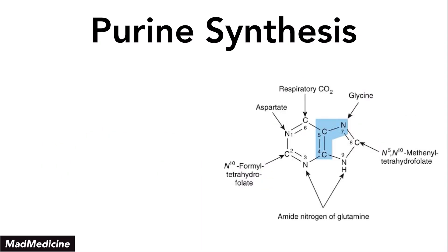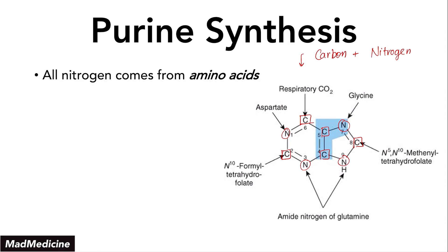Let's talk about this synthesis process. This image is very high yield and important. There are two essential components of any nucleotide you need to know. Number one is carbon — from several molecules shown here. Number two is nitrogen — from several positions shown here. You need to know where these components are coming from. When it comes to nitrogen, they're coming from amino acids — specifically aspartate, glutamine, and glycine.